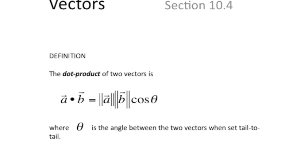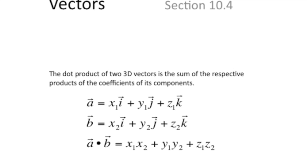The dot product is a scalar number — it is not a vector. The dot product of two vectors is the product of the magnitudes of the two vectors times the cosine of the angle between the two vectors when set tail to tail. It doesn't mean you have to move them to get the dot product; it just means that if you moved them, there would be an angle. That is the definition of dot product. But you can also, if you have two vectors a and b in component form, get the dot product by multiplying the coefficients of the components of the two vectors.